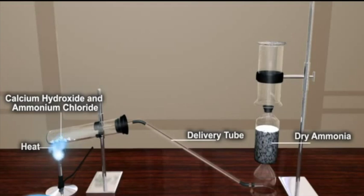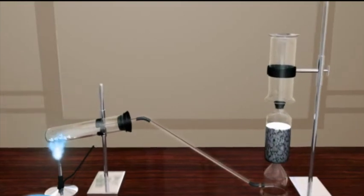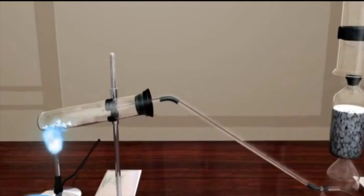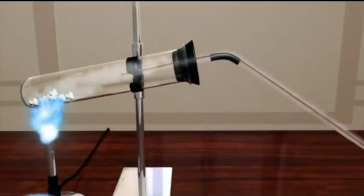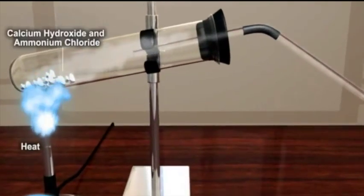Ammonia is prepared by heating the mixture of calcium hydroxide and ammonium chloride. The tube in which ammonia is generated is fixed in a slanting position to prevent the water formed from running back and cracking the whole tube.